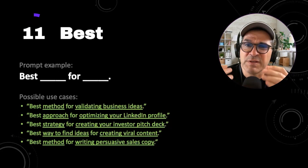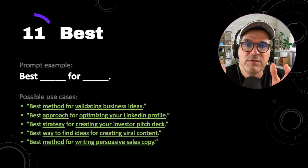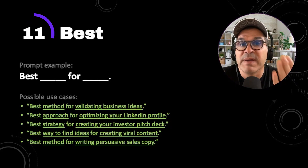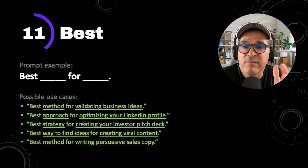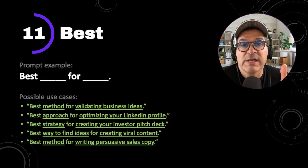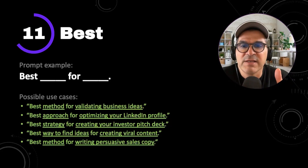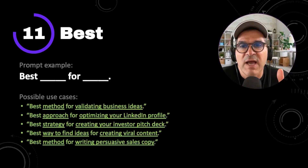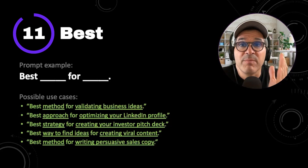Prompt number 11 is best. The prompt example is best blank for blank. You've just seen lists, but what if you just want the best? Let ChatGPT go through the list for you and give you the best results. Some use cases: best method for validating business ideas, best approach for optimizing your LinkedIn profile, best strategy for creating your investor pitch deck, best way to find ideas for creating viral content, or best method for writing persuasive sales copy. When you really don't want a list and you're looking for one result — the best result — use best.